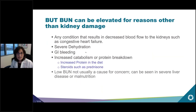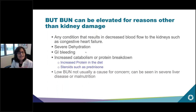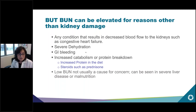However, BUN is not a greatly accurate measure of kidney function because it can be elevated for reasons other than kidney damage — for example, any condition resulting in decreased blood flow to the kidneys such as congestive heart failure, severe dehydration, GI bleeding, or anything causing increased protein breakdown such as a high-protein diet or steroids like prednisone. Low BUN is not usually a cause for concern, though it can be seen in severe liver disease or malnutrition.